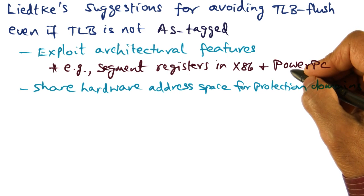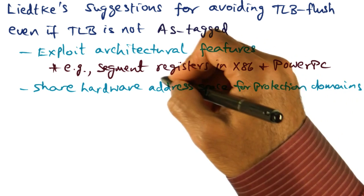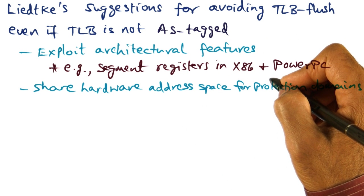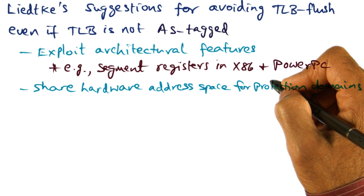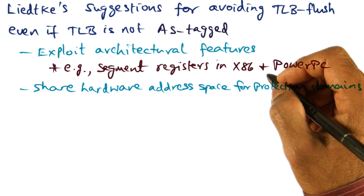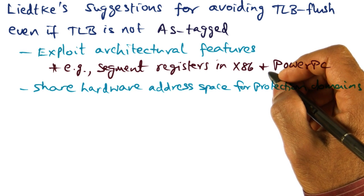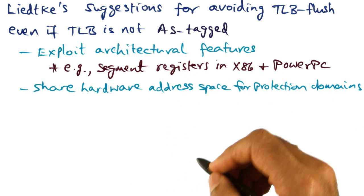For example, the architecture may offer segment registers. In x86 and PowerPC, both of them offer segment registers. What these segment registers do is give an opportunity for the operating system to specify the range of virtual addresses that can be legally accessed by the currently running process. This means that even though you have a linear virtual address space, you can carve it out among several different protection domains by using segment registers.